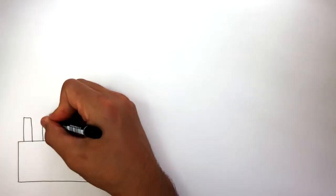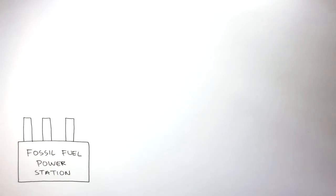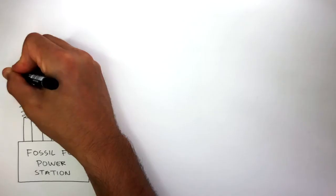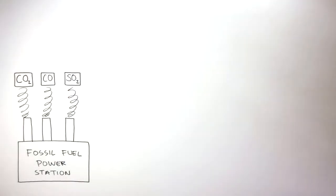Here I'm drawing a fossil fuel power station, which runs on fossil fuels such as coal, oil and natural gas. And we already know these fossil fuels all contain carbon and some sulfur impurities. Therefore, the combustion of these fuels produces pollution, such as carbon dioxide, carbon monoxide and sulfur dioxide.